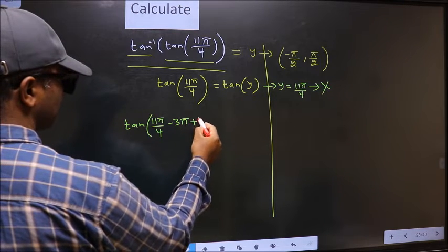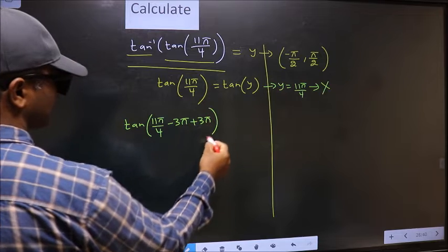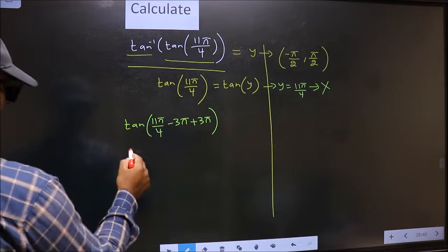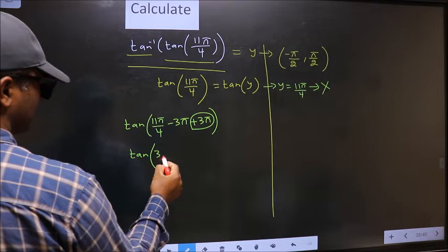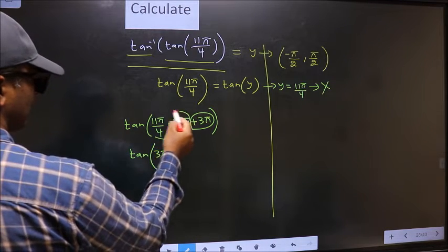Now whatever we are subtracting we should also add the same thing. Next, tan. Now this 3π I write at the start. This you calculate.